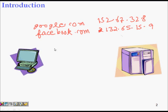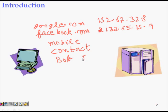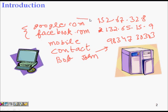Everyone can easily remember facebook.com or google.com. It's like your mobile phone contact list — you remember your friend's name like Bob or John, and the mapping from name to phone number is maintained by your contact list. Similarly, the DNS server maps a URL or domain name to an IP address.